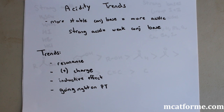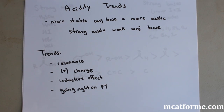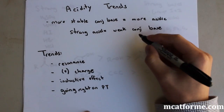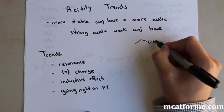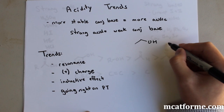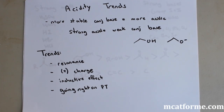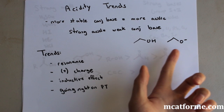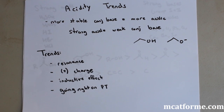Now we're going to talk about a very important topic for the OC section of the MCAT, which is acidity. A lot of times they'll give you a bunch of different molecules and ask which one's the most acidic, which one's the most basic, which one's the least acidic. Something that has a more stable conjugate base is going to be more acidic — a strong acid has a weak conjugate base. For example, with this alcohol, its conjugate base is formed by removing the hydrogen, and a more stable conjugate base will make the acid stronger.